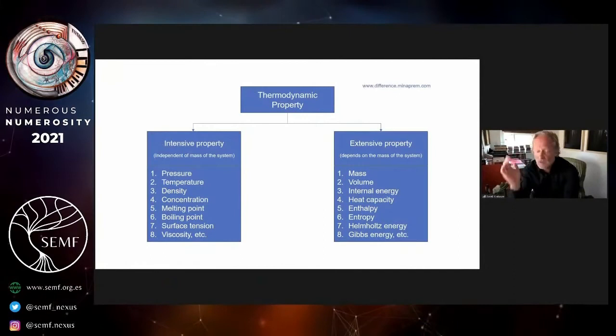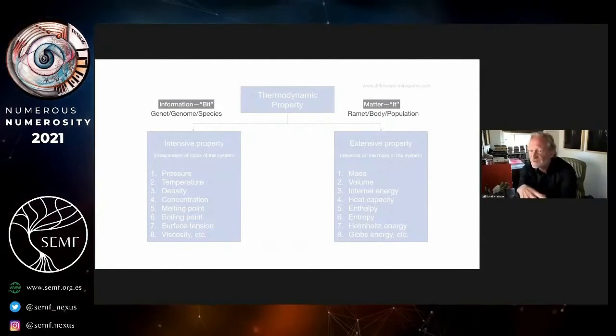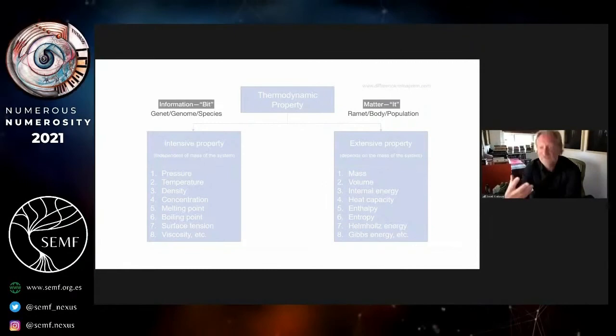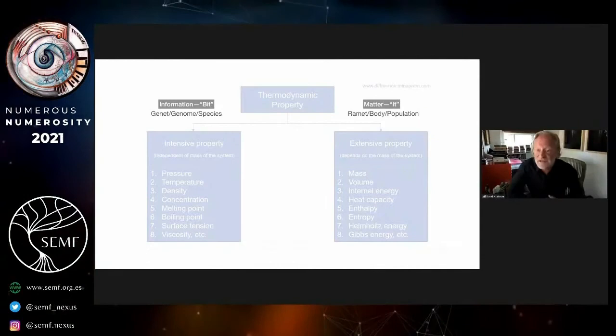As opposed to extensive properties, which scale: mass, volume, entropy, Gibbs energy, and so on. Informational quantities, bit-like quantities, are by and large intensive—the genet, the genome, the species—these are intensive. Whereas the ramet, the body, or the population size are extensive. Many of those disputes that I showed you, that you correctly identified in our quiz, come from whether you're looking at the intensive variables, the bit-like variables, or the extensive material variables, the it-like variables.